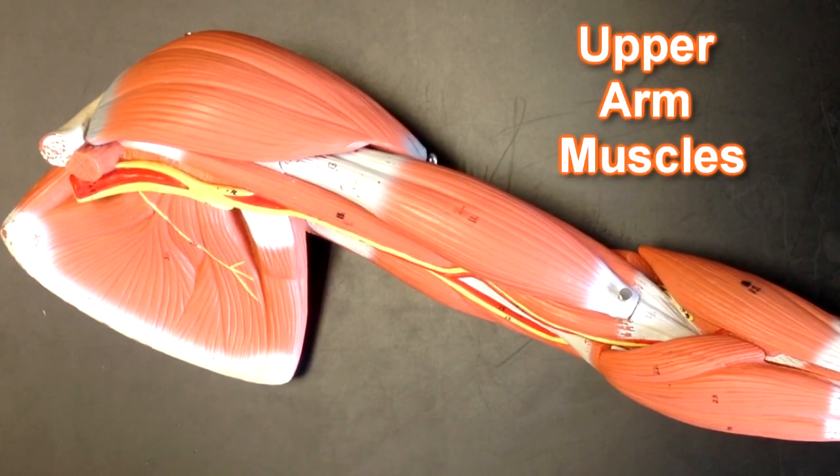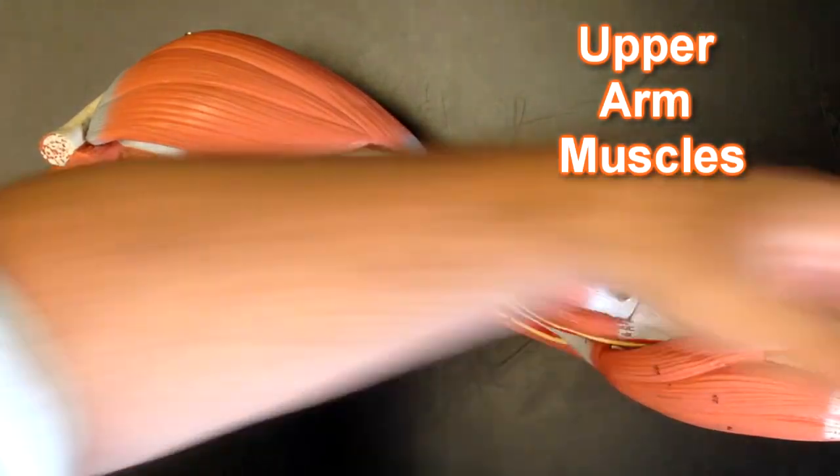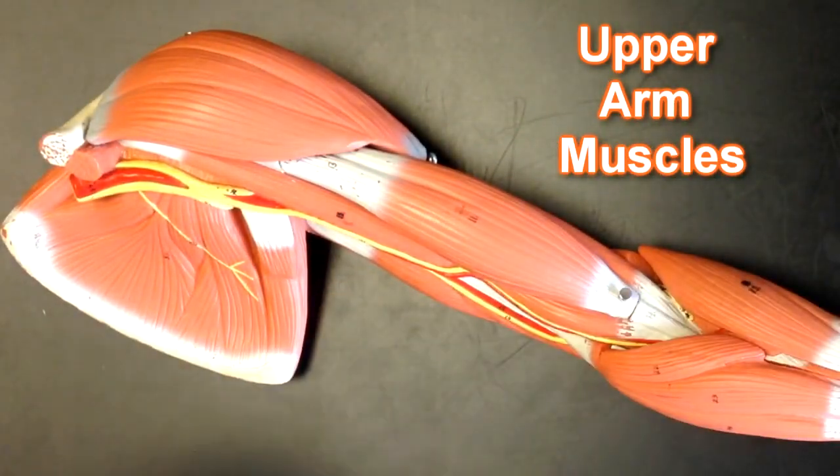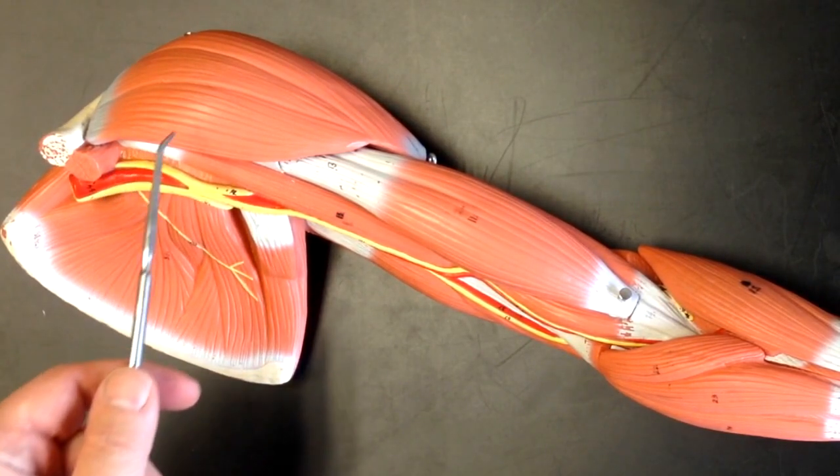Hello, this is Dr. Loos from humanbodyhelp.com and today I'll be running through the muscles of the upper extremity. Right now we're looking at an anterior view with the hand slightly pronated so that we can see the muscles. I'll start up at the top here.